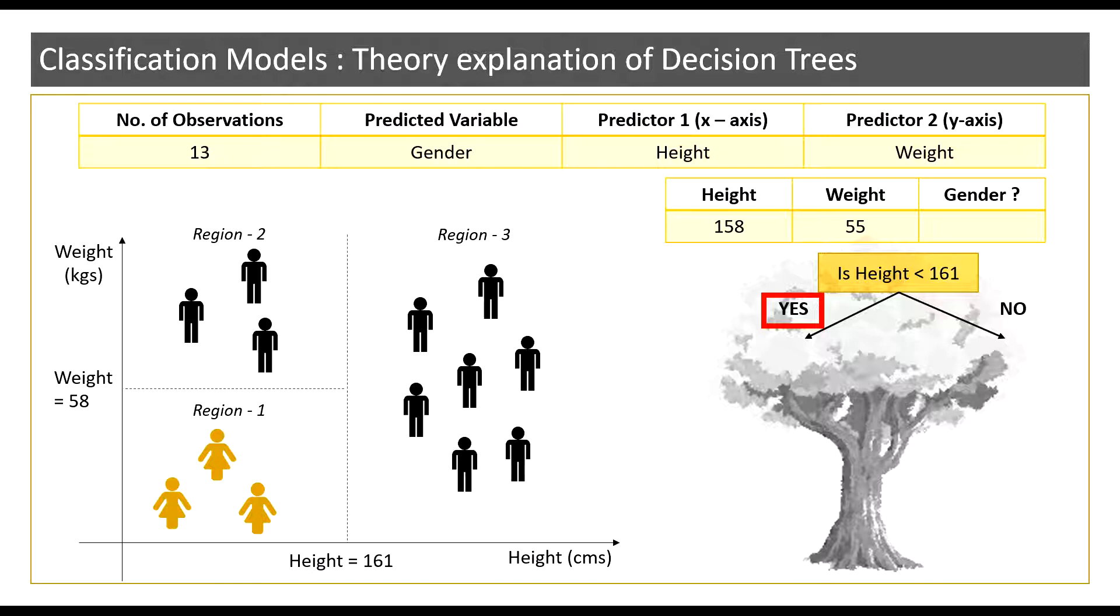Now from the graph on the left we can observe that below the threshold value of height 161 centimeters there are six observations but from both male and female, from both genders. Now note that I need to only predict one gender value. Since I cannot arrive at a decisive outcome I now call upon the second threshold value which is weight.